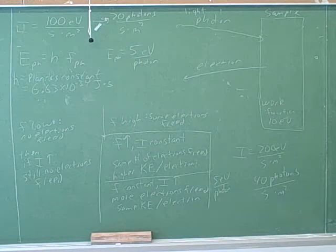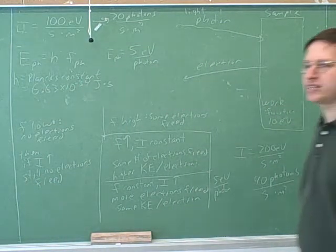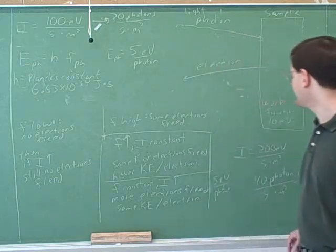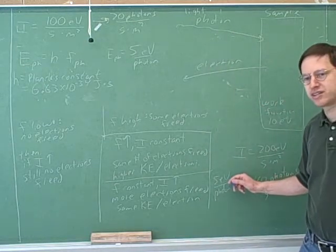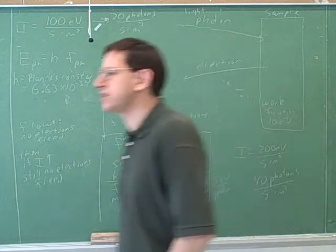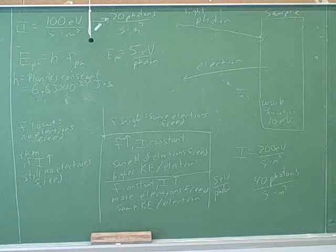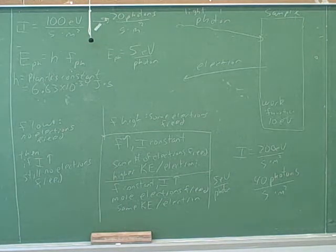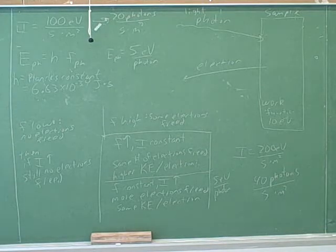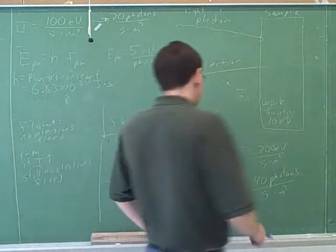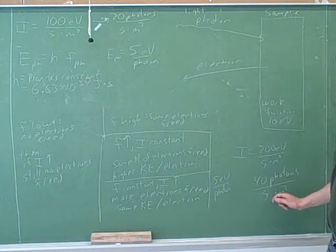So now in Einstein's theory, what does the intensity really tell us? It's really telling us the number of photons we're shooting. It's always important not to confuse the photons and the electrons. When we increase the intensity, that means we're shooting more photons per second per square meter.